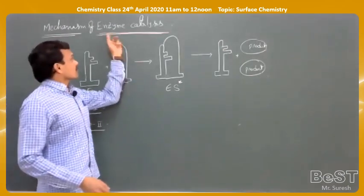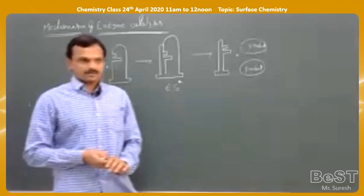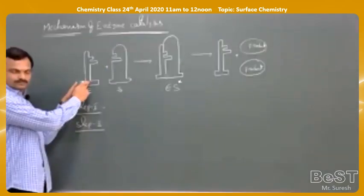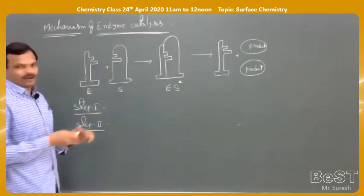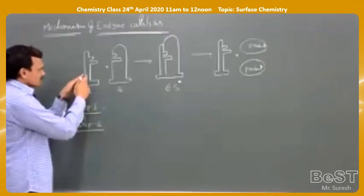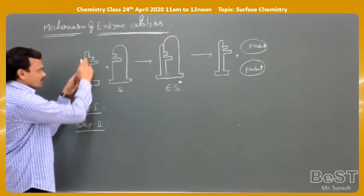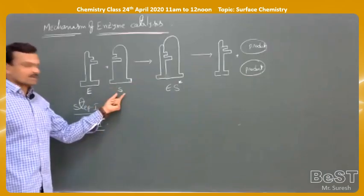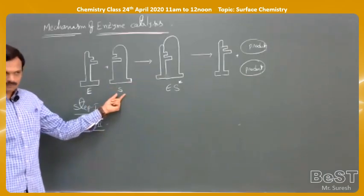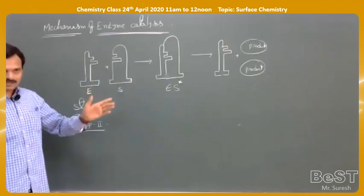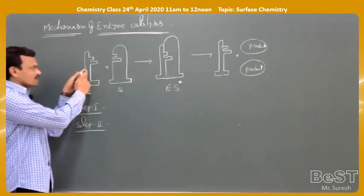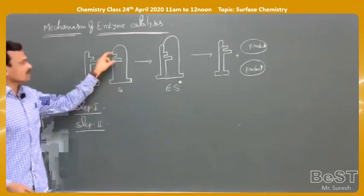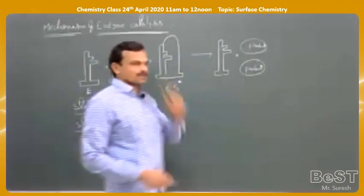Enzyme catalysis takes place in two steps. This is also called the key-lock mechanism — the key is taken as the enzyme and the lock is taken as the substrate. Substrate means nothing but the reacting molecule. For an enzyme to act as a catalyst, the shape of the enzyme must be complementary to the shape of the substrate.